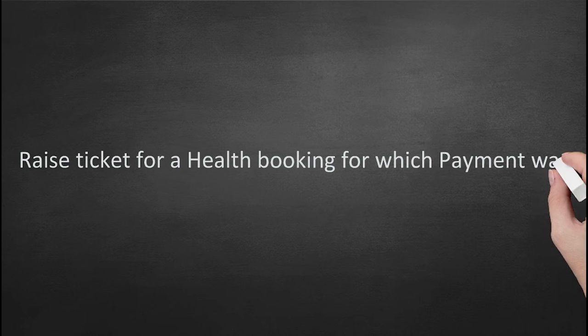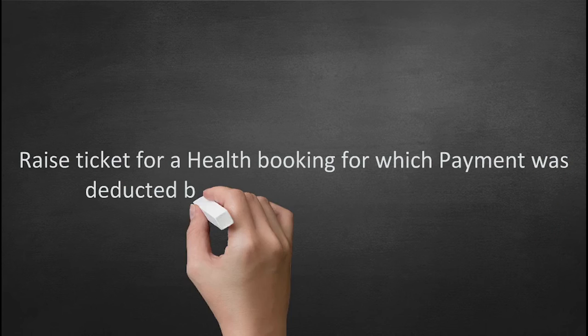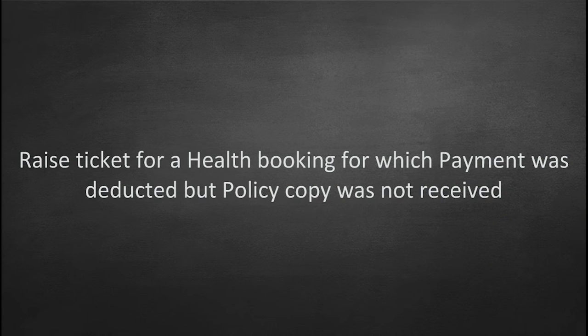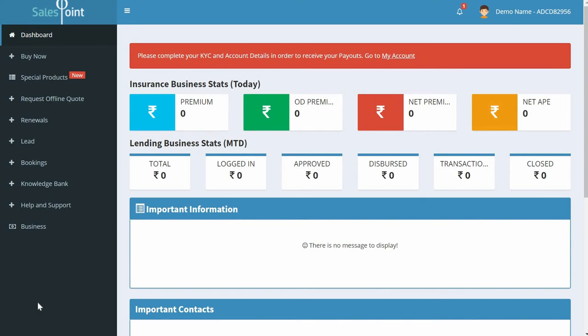For a health booking whose payment was deducted but policy copy was not received: once you log in, you'll land on the dashboard page. On the left-hand side is a menu — select Help and Support. A drop-down appears. Click on New Ticket.